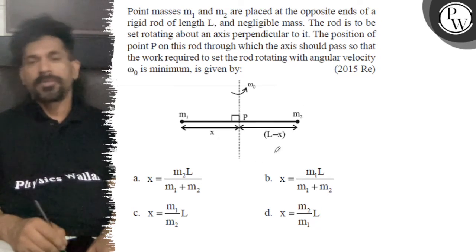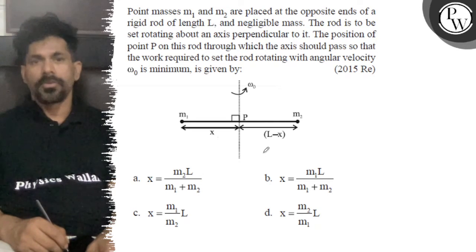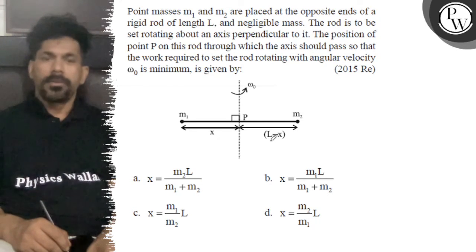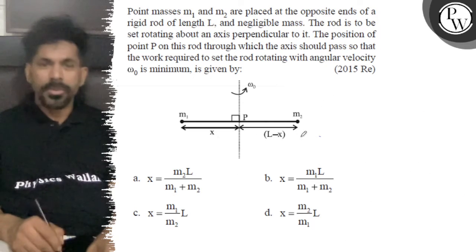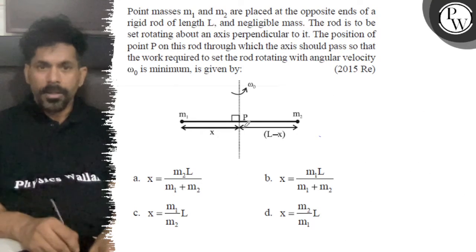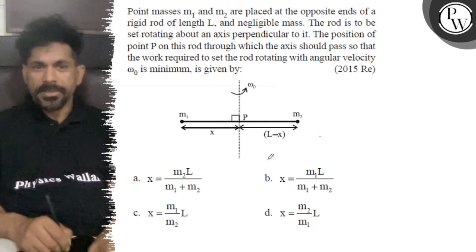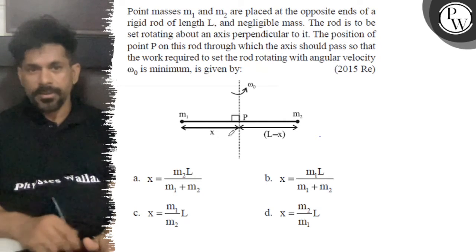If we go to the center of mass, the kinetic energy will be minimum. Let's look at the center of mass, where will it be? This is x and this is L minus x, which means total L.